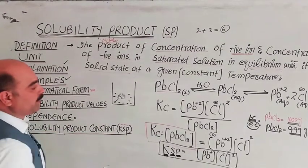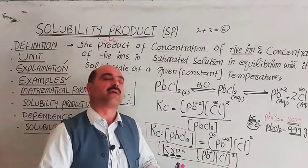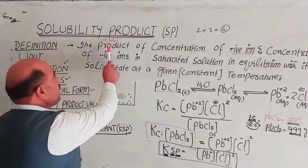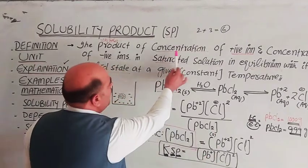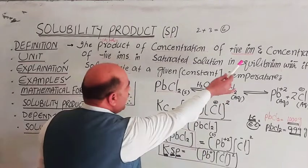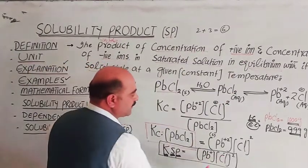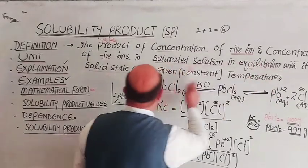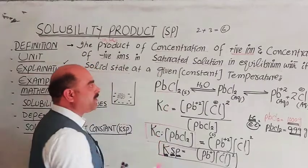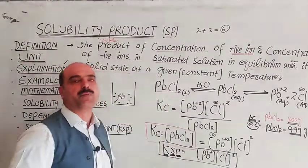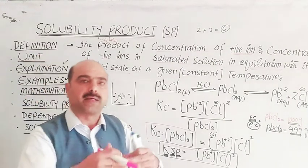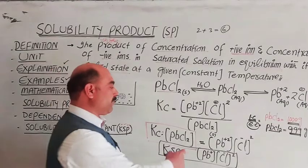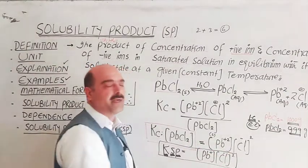This K_SP is called the solubility product constant. Since solid concentration is omitted, we arrive at the definition: the product of concentrations of positive ions and negative ions — using square bracket notation for concentration — in a saturated solution, in equilibrium with its solid salt, at a fixed temperature. K_SP = [Pb²⁺][Cl⁻]².